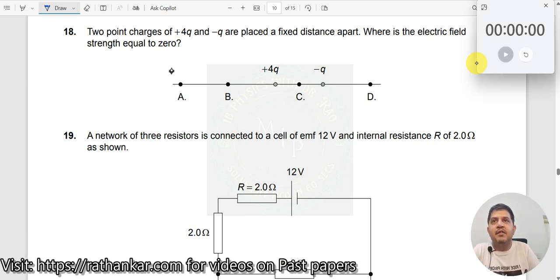Question number 18: Two point charges of plus 4Q and minus Q are placed apart. What is the electric field strength? Where is the electric field strength equal to zero? Where is it zero?